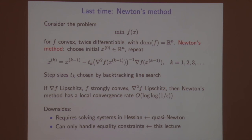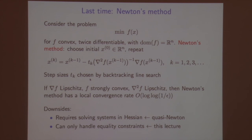Step sizes are usually chosen by backtracking, the same strategy used in first-order methods. Pure Newton's method takes all step sizes equal to 1, meaning I'm moving fully to the minimizer of the quadratic approximation, but it doesn't necessarily converge. Under general conditions, Newton's method converges with backtracking and achieves fast local convergence — log log(1/ε) iterations to get within ε accuracy in the criterion difference.